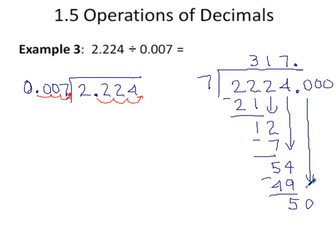7 into 50 goes 7 times. 7 times 7 is 49. 50 minus 49 is 1. Drop down to 0. You can keep doing this as long as you need to.